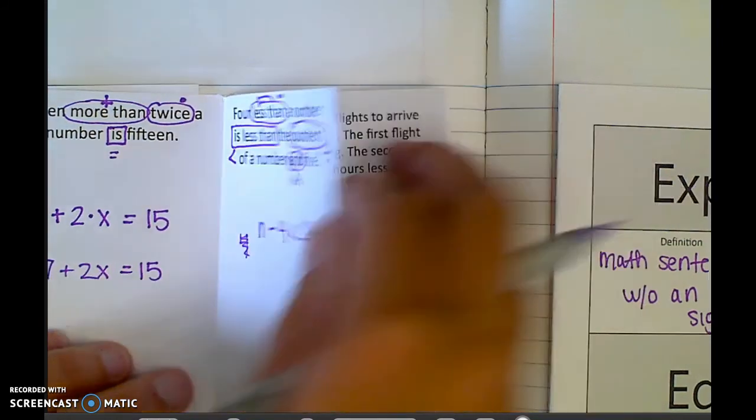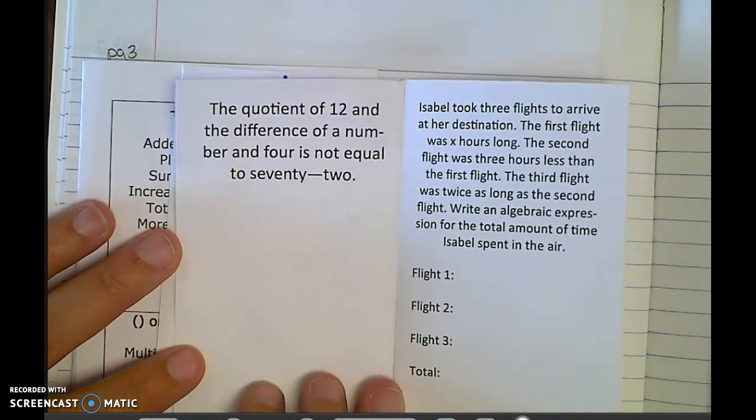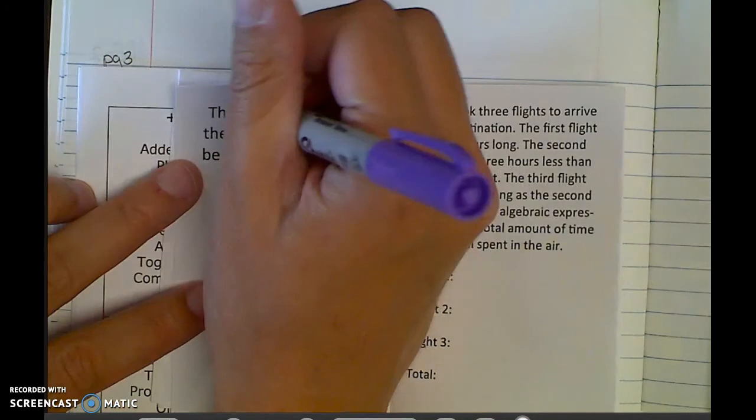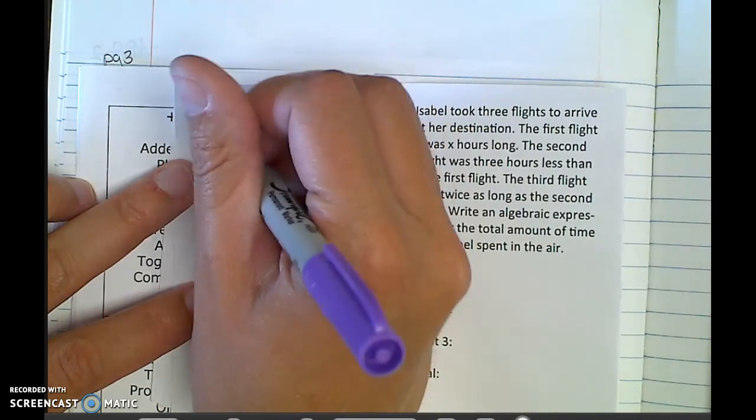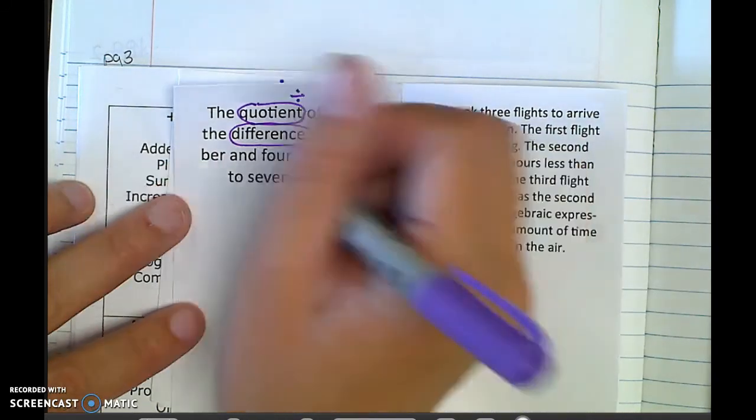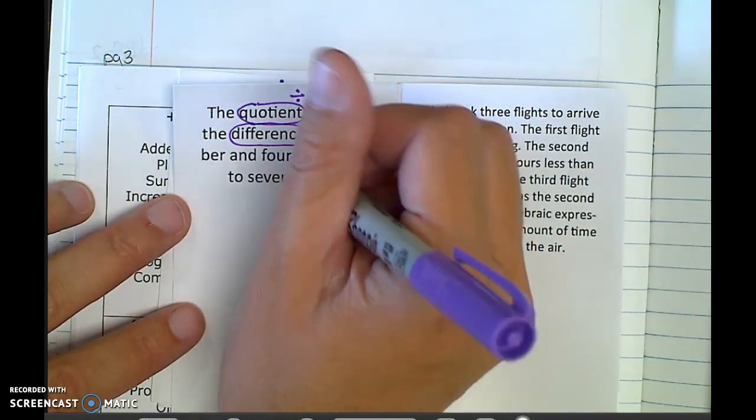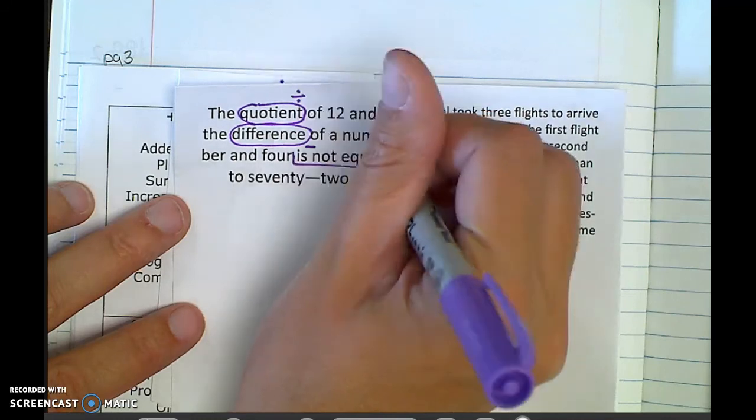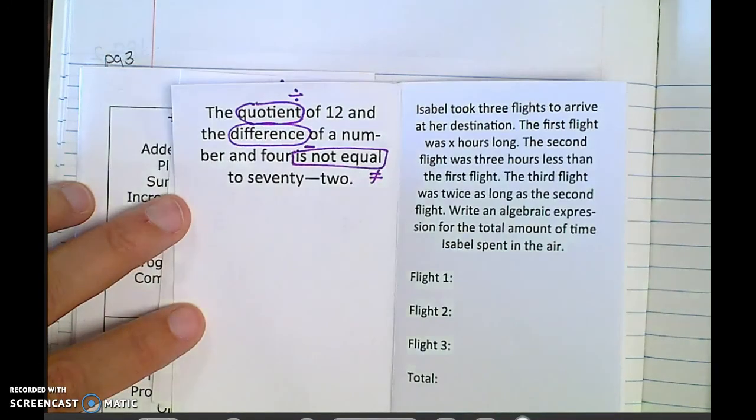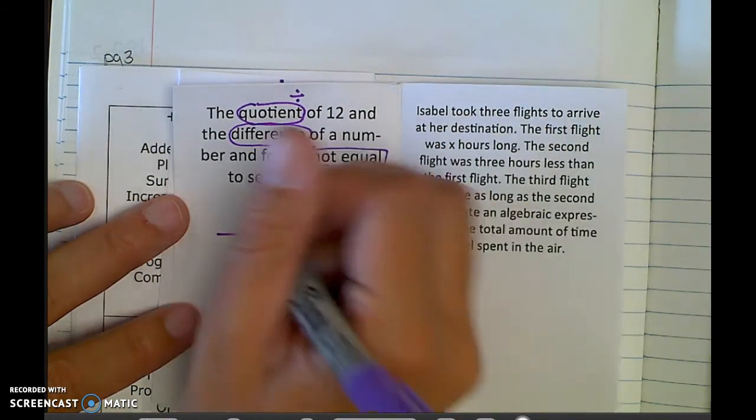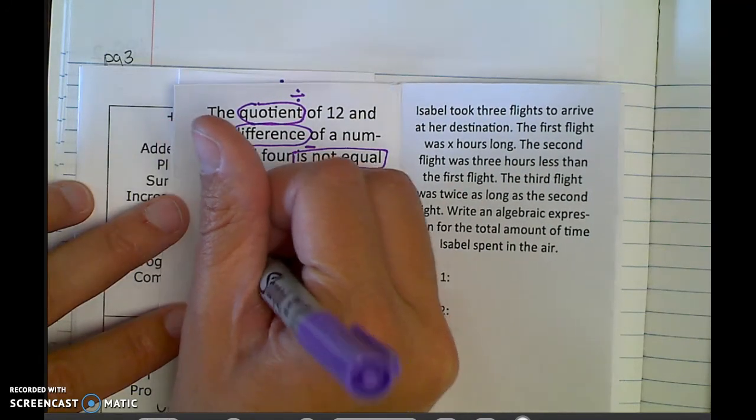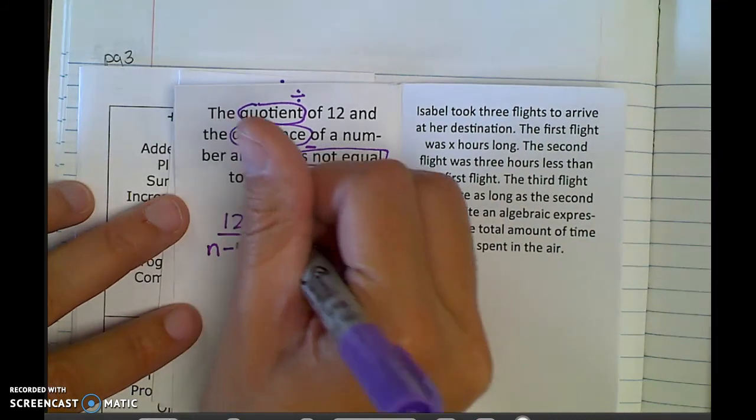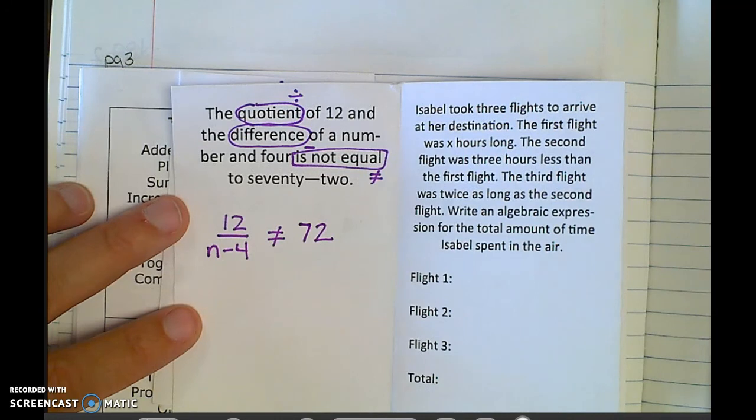We'll try one more. The quotient of 12 and the difference of a number and 4 is not equal to 72. So there's that quotient word again, which was division. Of 12 and the difference. Difference is a really good subtraction word. The quotient of a number and 4 is not equal to 72. So the quotient of 12 and the difference of a number and 4 is not equal to 72. Hopefully that's how you read that.